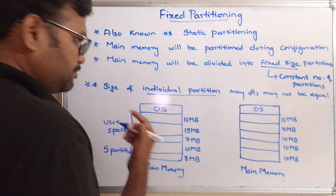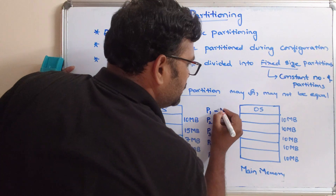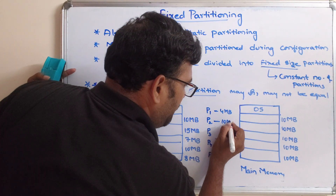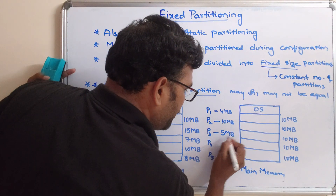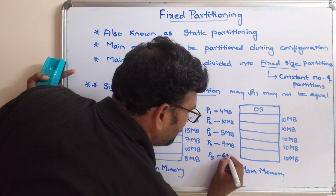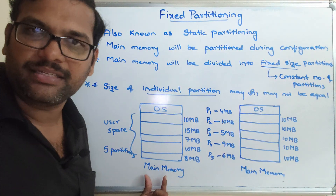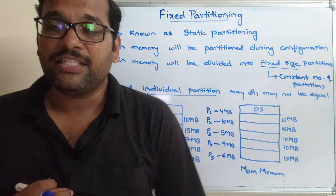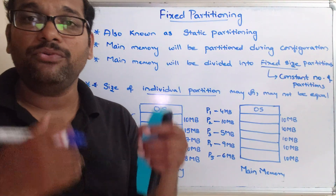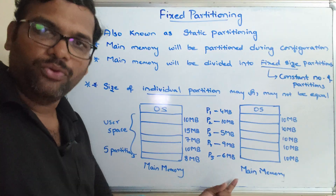For example, we are having 5 processes: P1, P2, P3, P4, and P5. P1 is 4 MB, P2 is 10 MB, P3 is 5 MB, P4 is 9 MB, and P5 is 6 MB. These processes should be accommodated into the partitions. In our previous session we have seen memory allocation methods - best fit, first fit, and worst fit. Among these three we have to choose one and allocate each process to a partition.